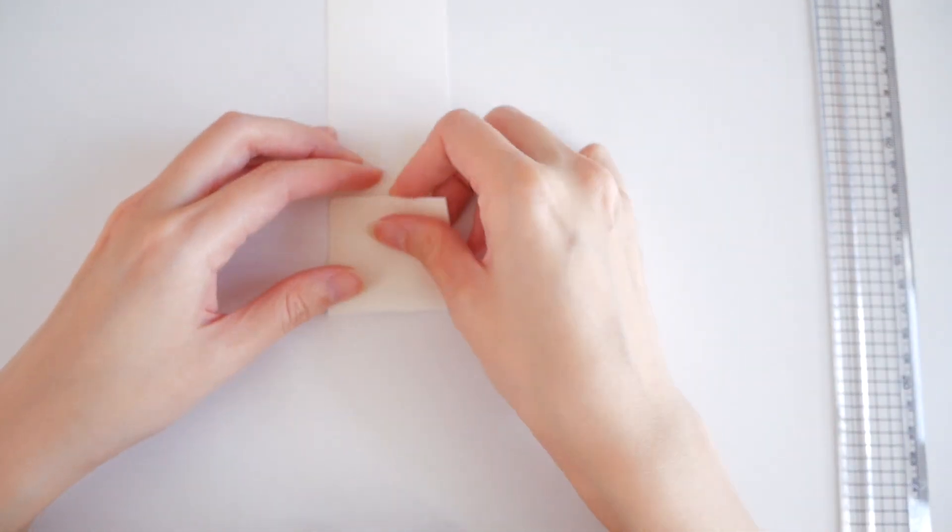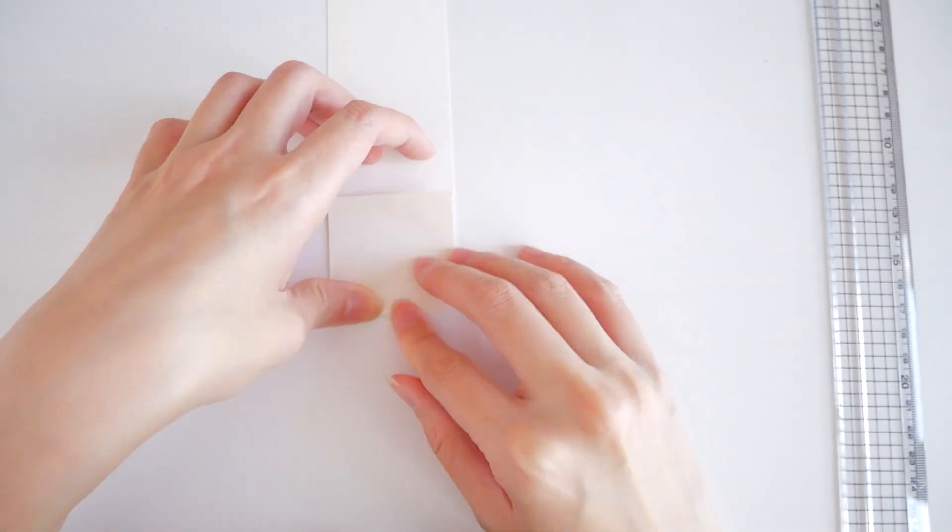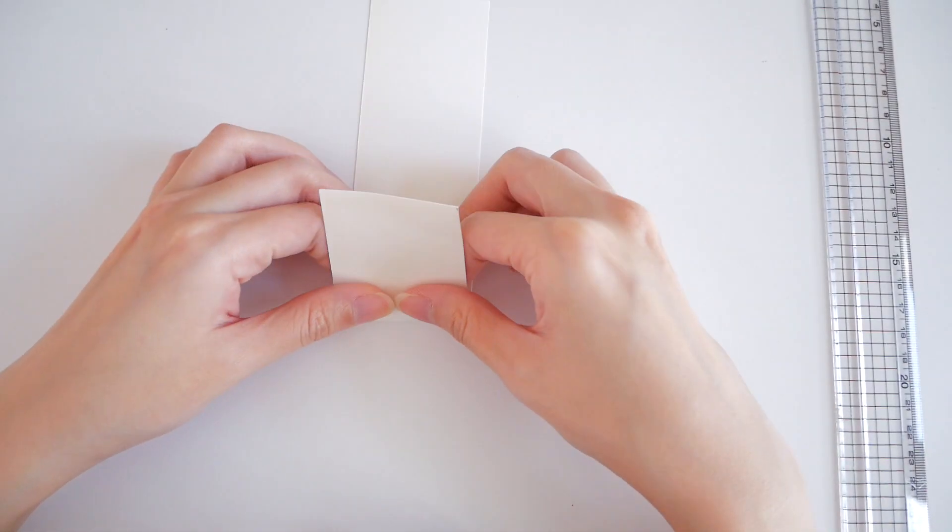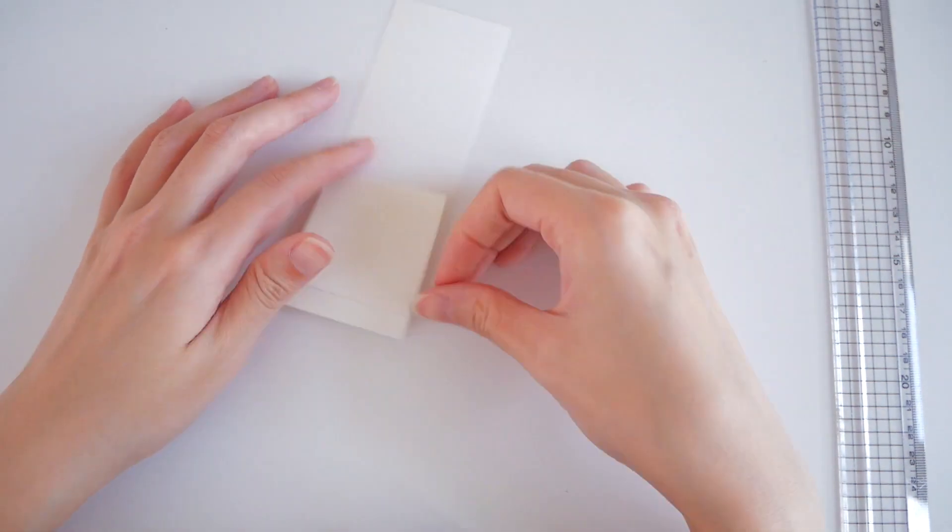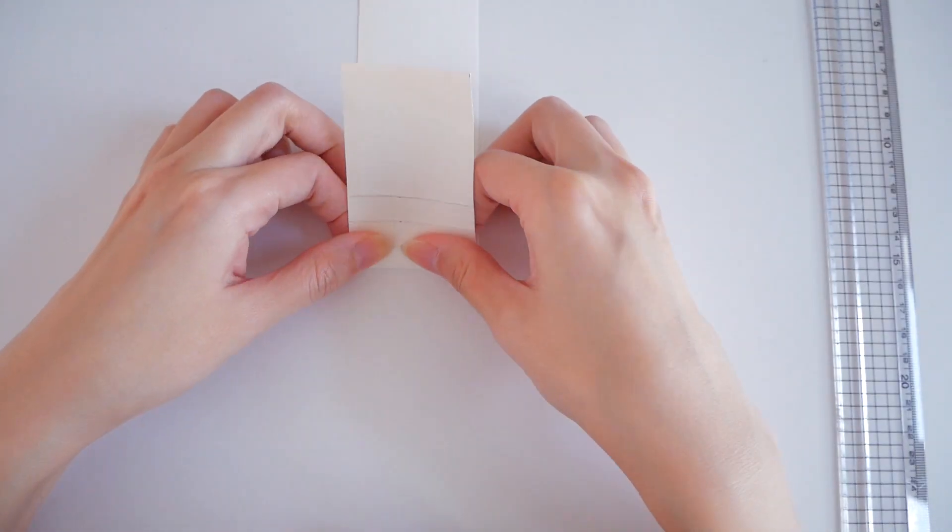Fold the card according to the lines drawn and make sure to really flatten out all the folds. This will make pulling the waterfall card smooth later on.